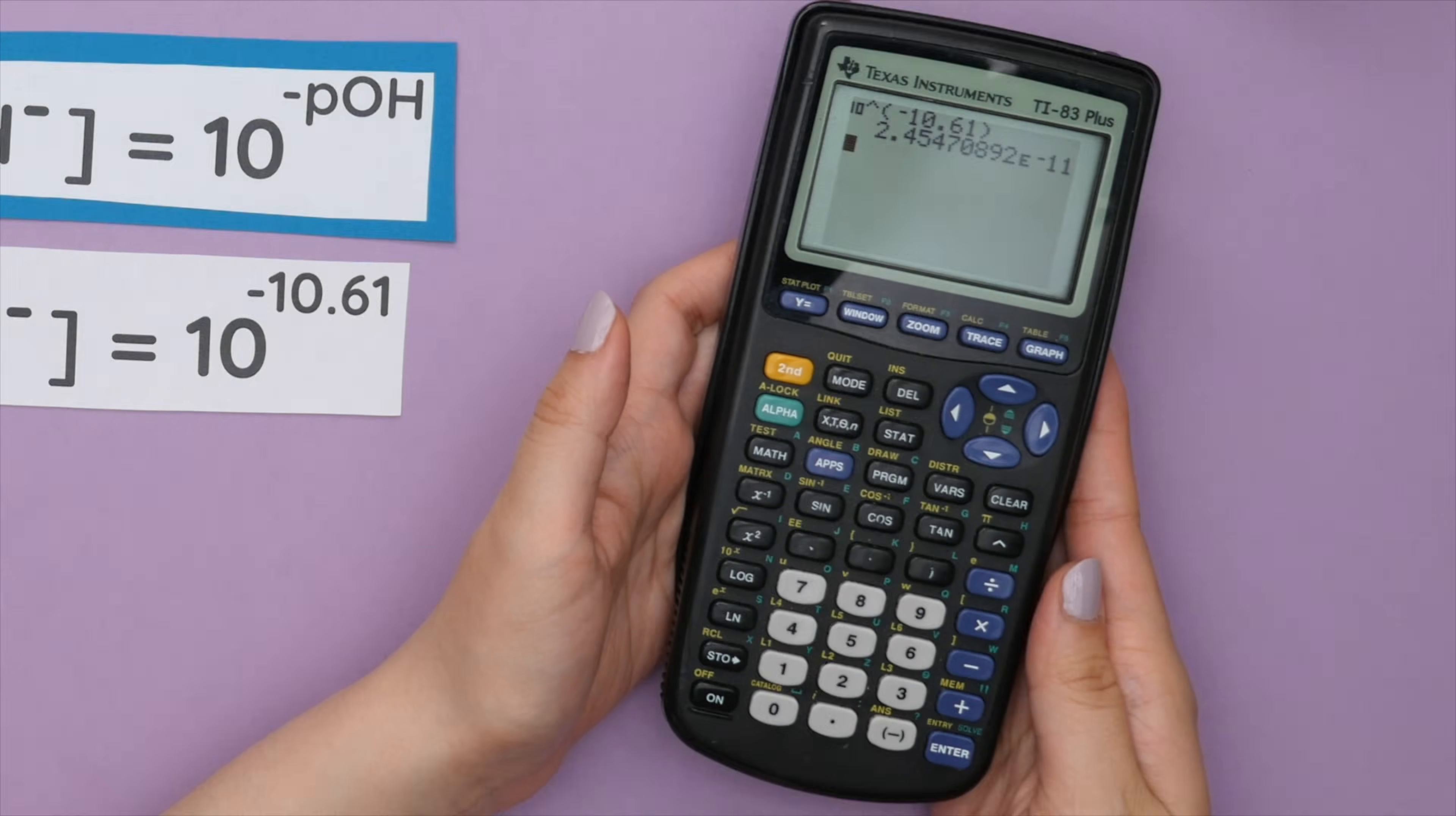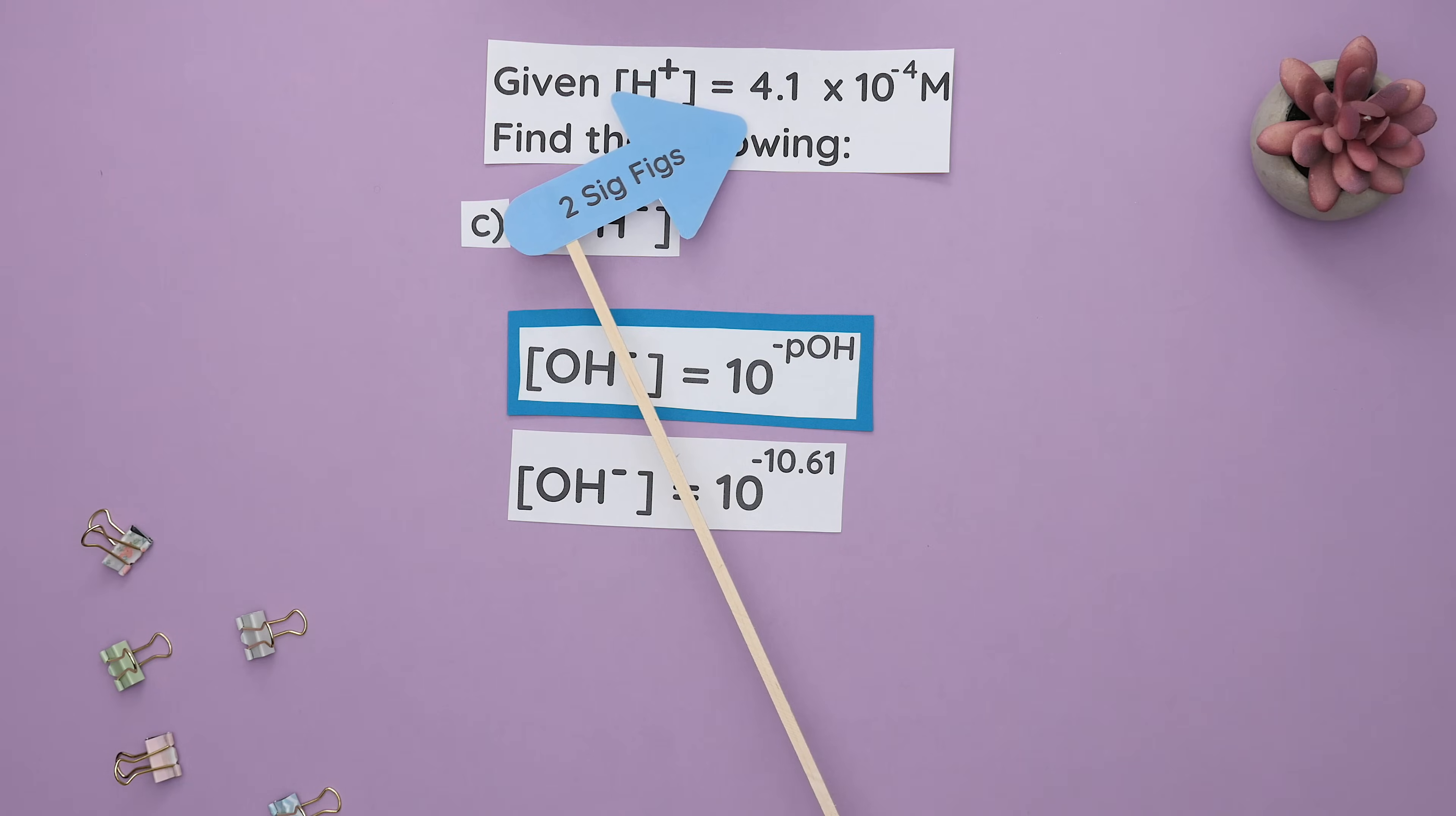Round two sig figs since our initial acid concentration had only two sig figs. This gives us 2.5 times 10 to the negative 11th and our units are in molarity since concentration is measured in molarity.